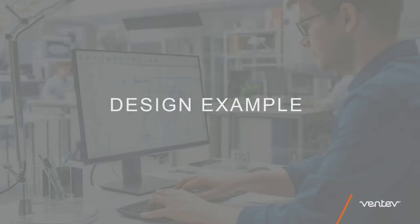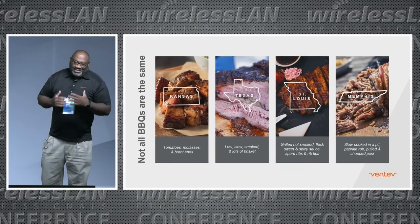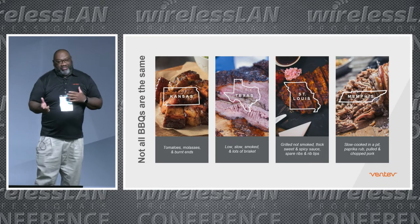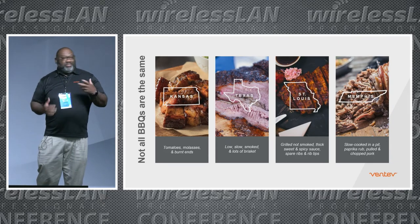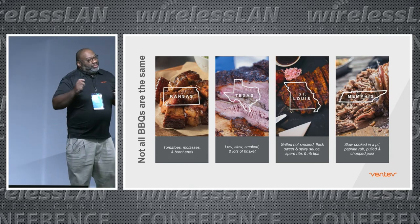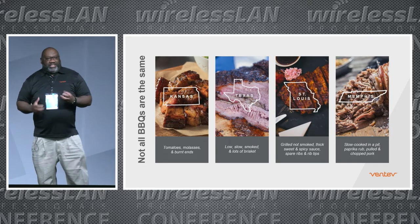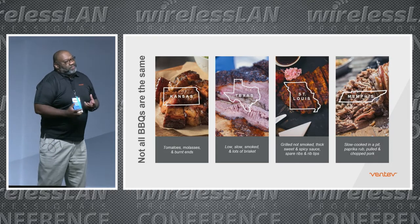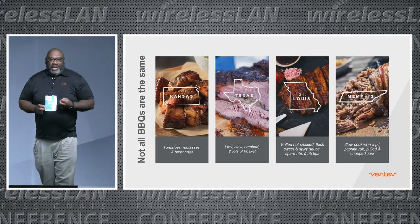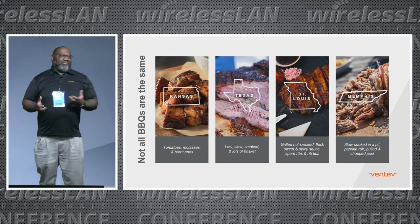I'll give you a design example. Not all barbecues are the same — I'm from Texas, so I'm partial to brisket. As you can see, we have different styles of barbecue: Kansas City, St. Louis, Memphis. All of them have the same building blocks — the meat — but they do something different to make it distinctive to where they're from. That's similar to antennas: you have a basic building block, and for us that building block is a dipole antenna. What do we do to make it customized? That's our process.